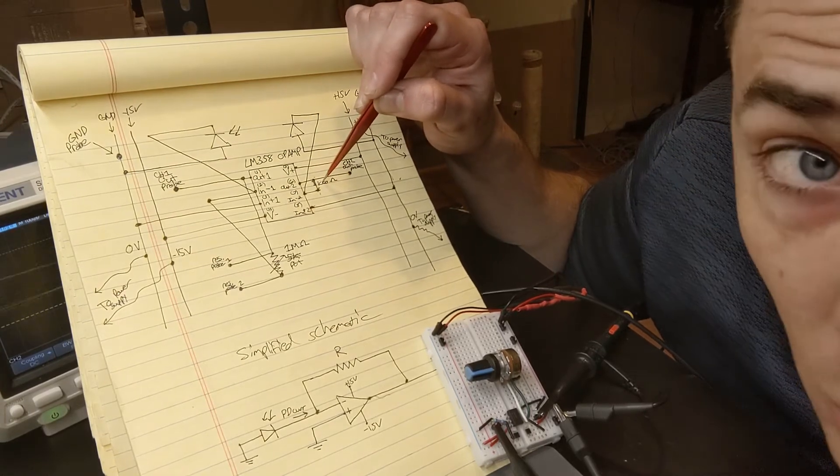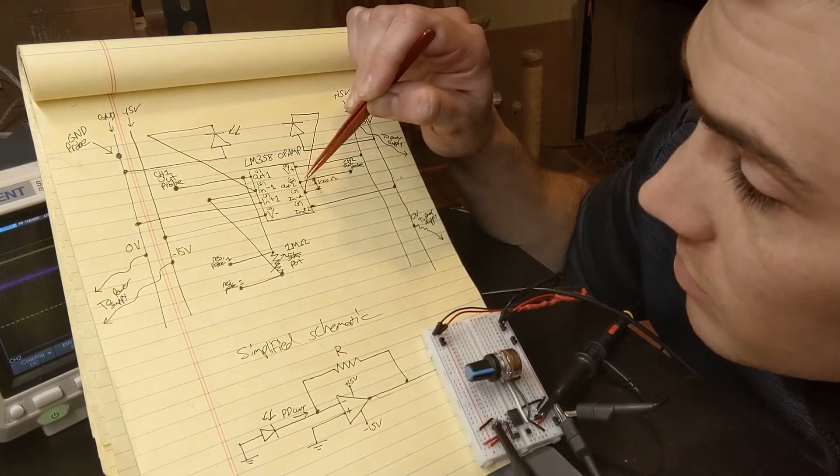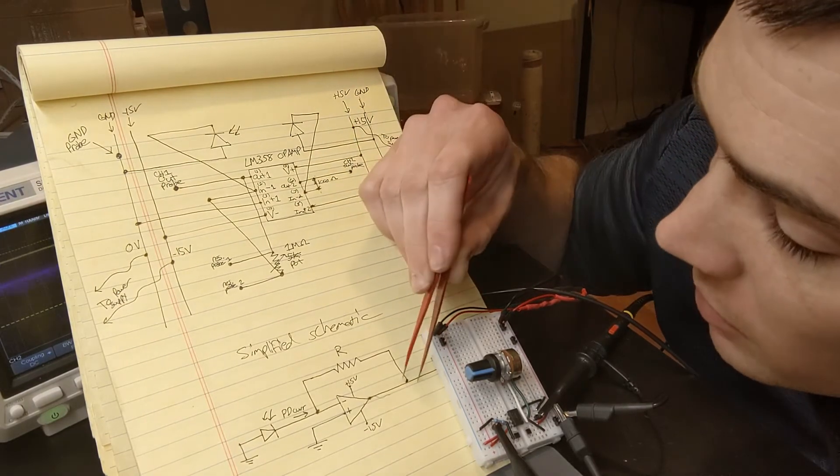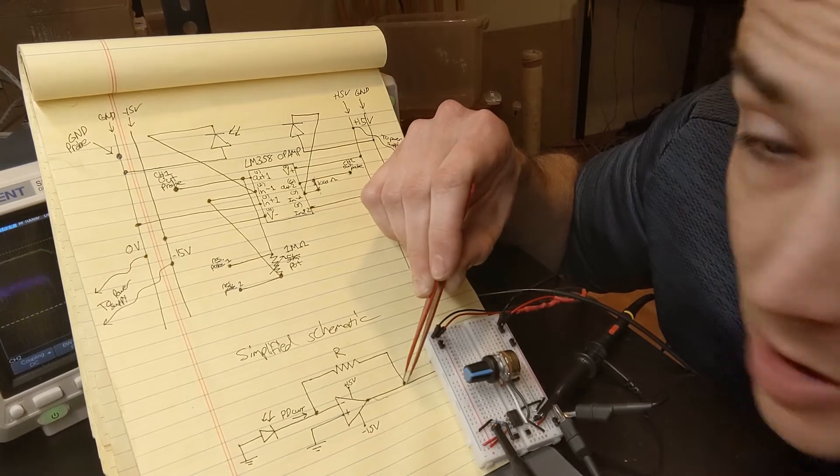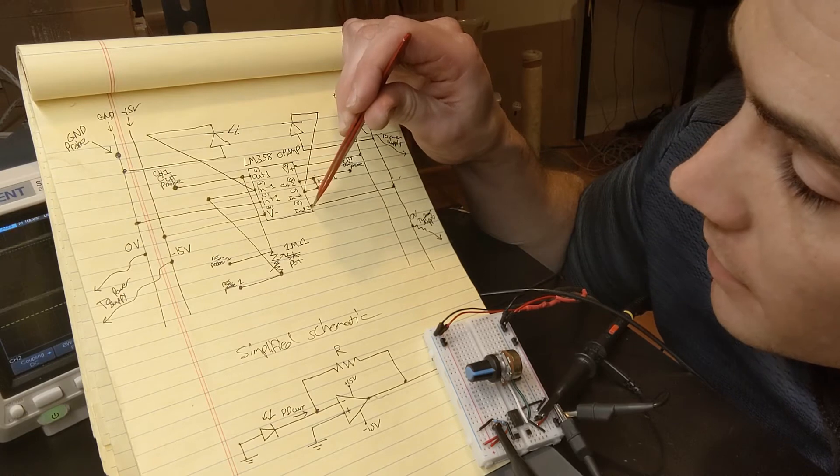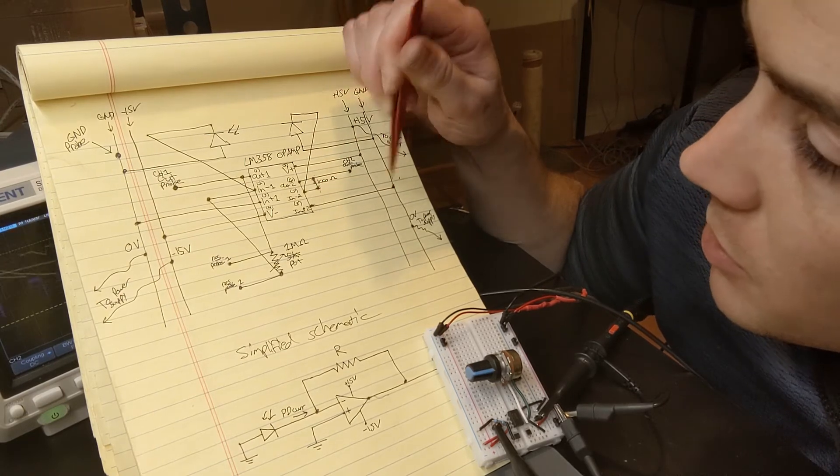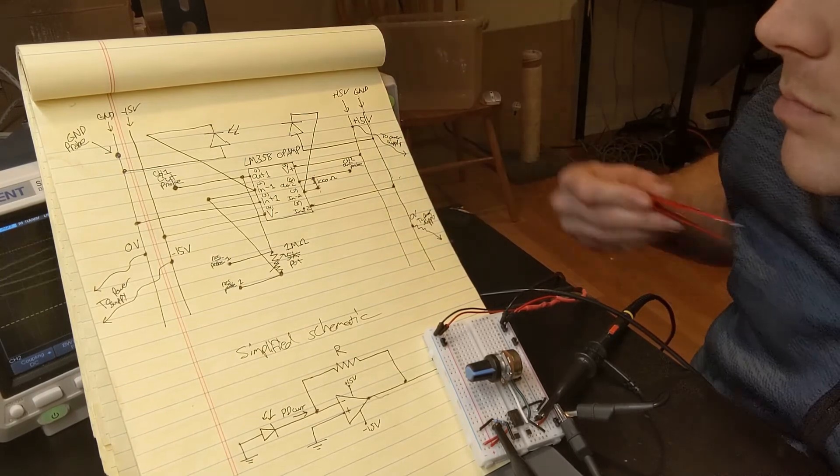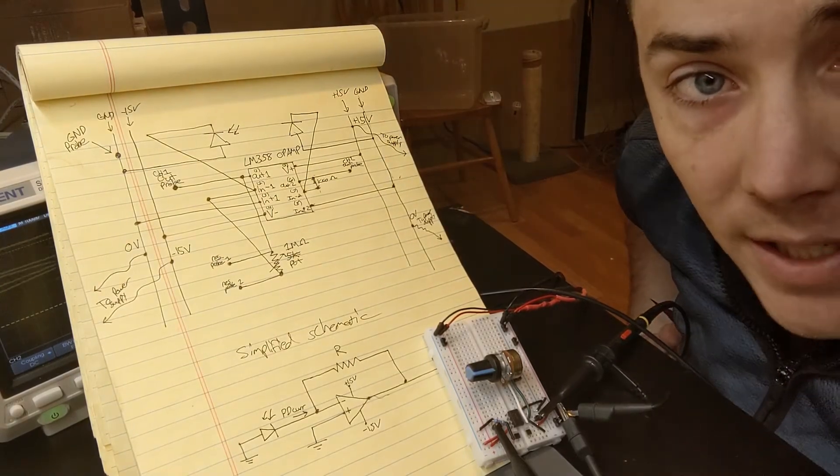So comes out of the inverting input, goes through a one kilo ohm resistor to the output. And I'm probing this spot down here, essentially. And the non-inverting inputs, you can see those are hooked up to ground. Okay, that's essentially it. It's pretty easy to build.